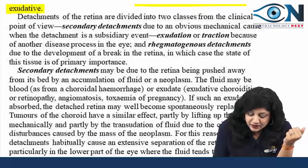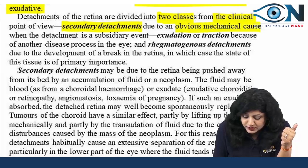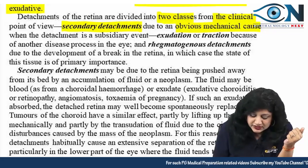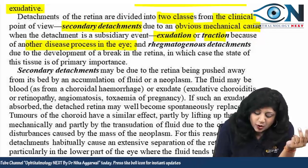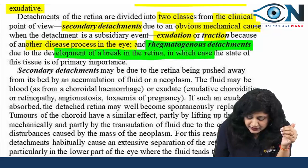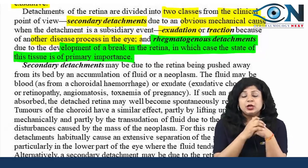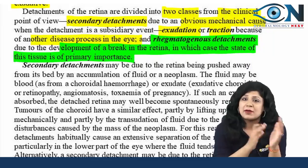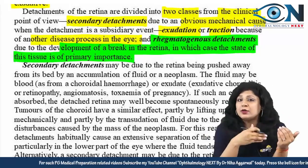Clinically, retinal detachments are of two types. One is where the cause lies in the retina itself — a retinal break — which is regmatogenous. The second is secondary, when the cause lies elsewhere: exudative, due to pushing of the retina by fluid or neoplasm, or tractional, due to pulling by fibrovascular tissue from another disease process.